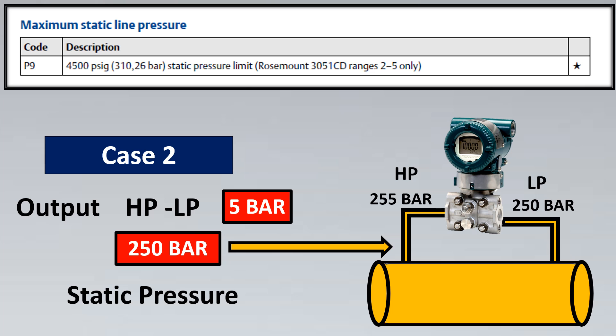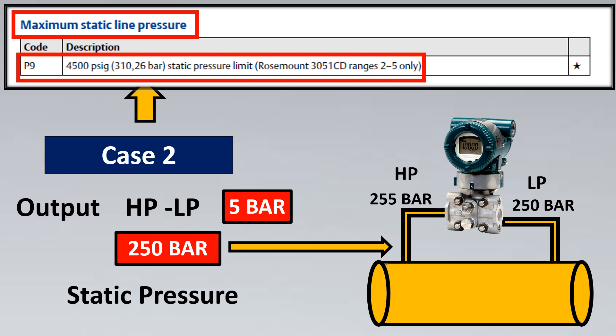Don't worry — there's a solution. In that same catalog, there is a special code, P9. With this code, the maximum static inline pressure goes up to 310 bar. Since our static pressure was 250 bar, we can use the special code P9 in our requisition or data sheets. This mistake is made by many engineers, causing transmitter failures on site, so please be conscious about checking the static pressure limit during the engineering stage.